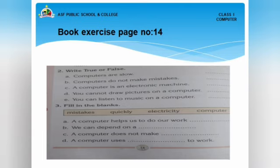A computer helps us to do our work — fill from the box: 'a computer helps us to do our work quickly.' Second: We can depend on our computer. Third: A computer does not make mistakes. Fourth: A computer uses electricity to work.